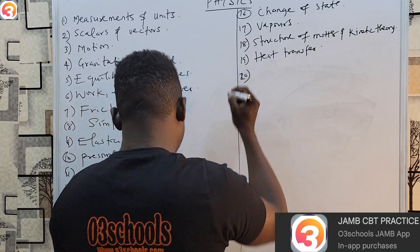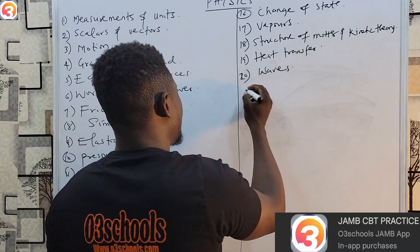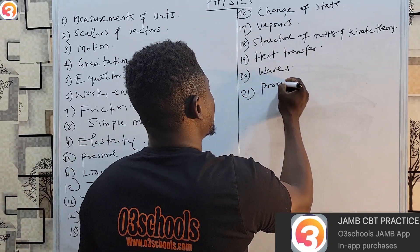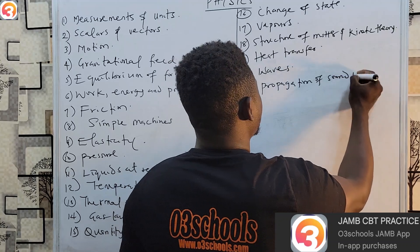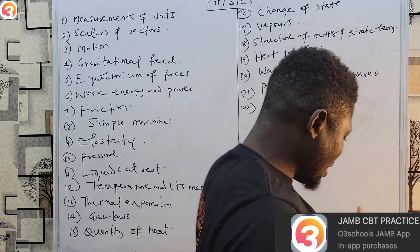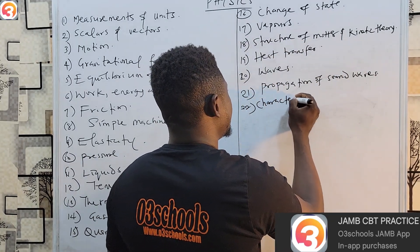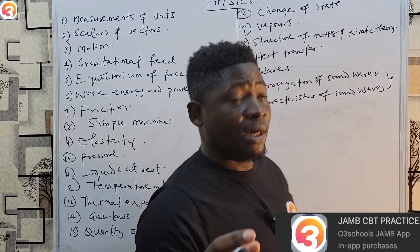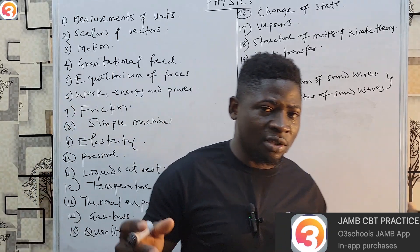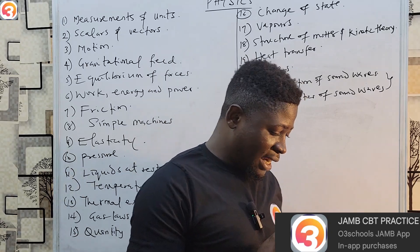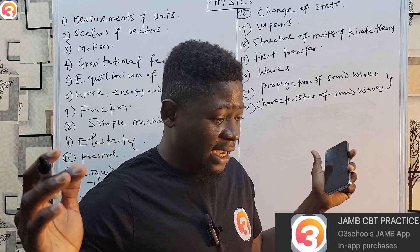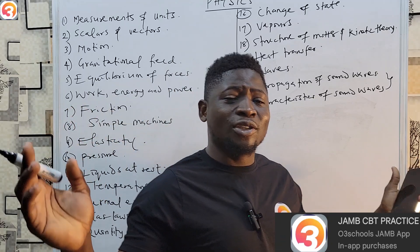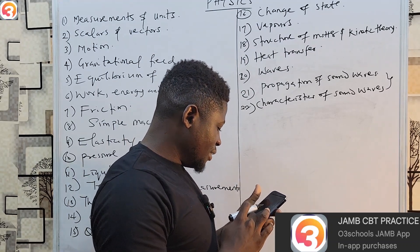The twentieth topic is waves and wave disturbance. The twenty-first topic is propagation of sound waves. The twenty-second topic is characteristics of sound waves — these two topics are covered together in one video on this channel. In that video we also discuss formulas for strings and pipes (open and closed), how to calculate for overtones and fundamental frequency, and so on.